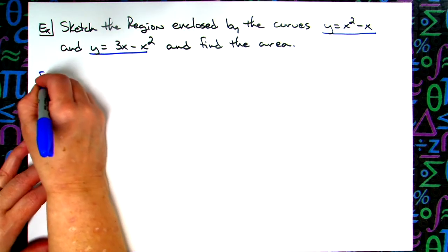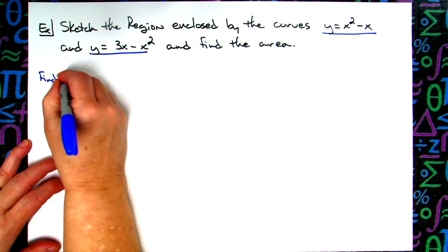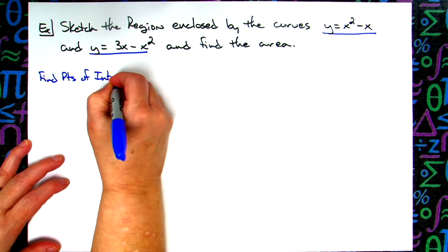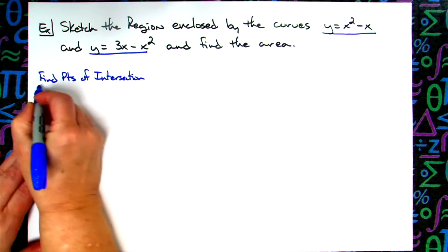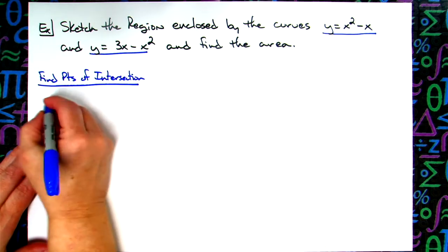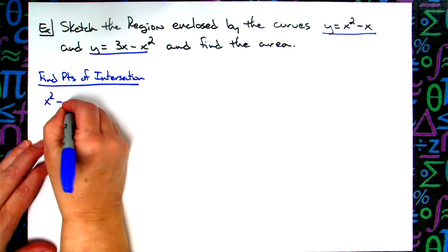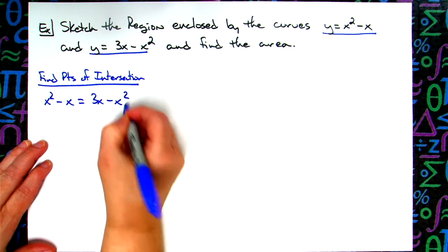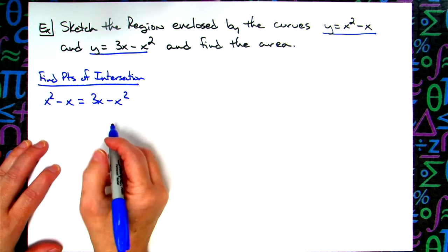So let's find points of intersection of the two curves, which basically just means I'm going to take the two curves and set them equal to each other. So I'm going to have x squared minus x set that equal to 3x minus x squared. I'm going to go ahead and move everything over to the left.